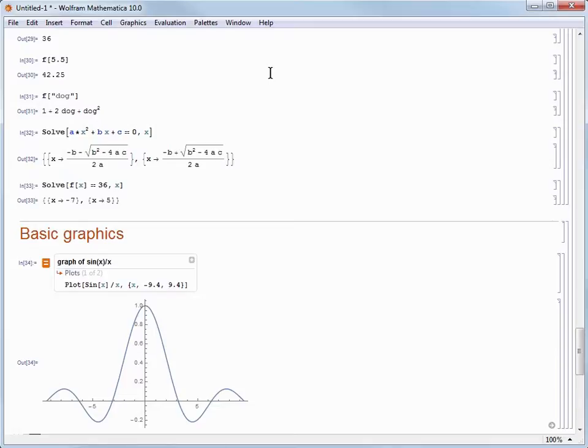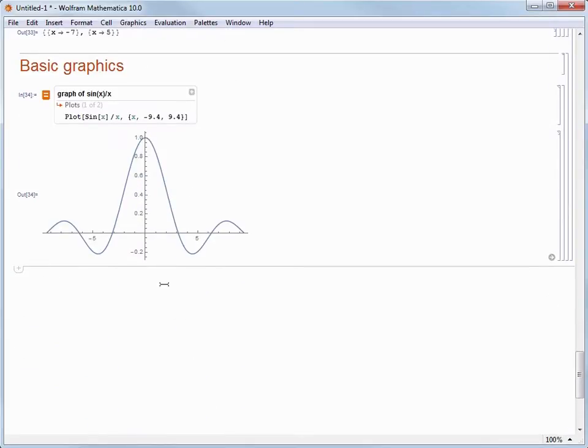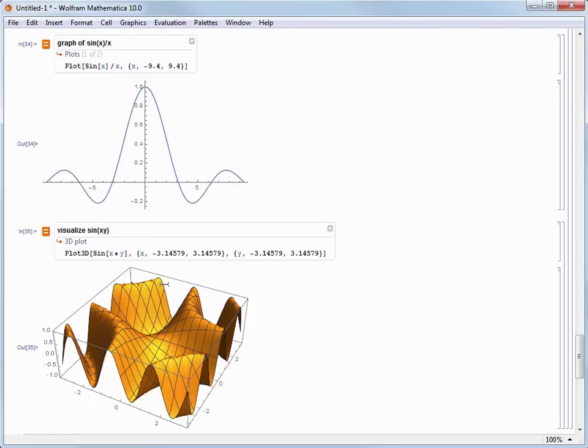Now let's do another one, and this time let's create something in 3D. We create another Freeform Input cell, and this time let's try asking it to visualize sine of x times y. With hitting Shift-Enter, we get the evaluation, and we see the Wolfram Language code, again, along with that result.